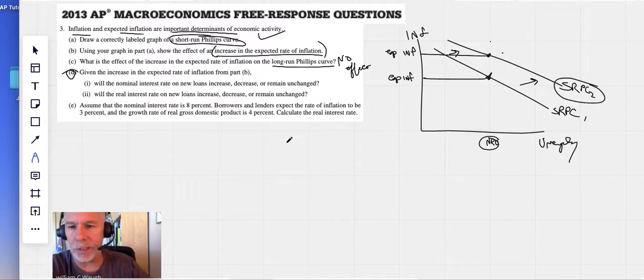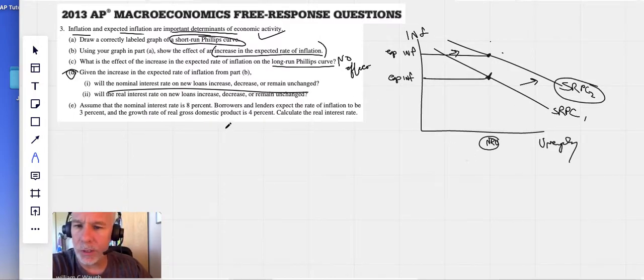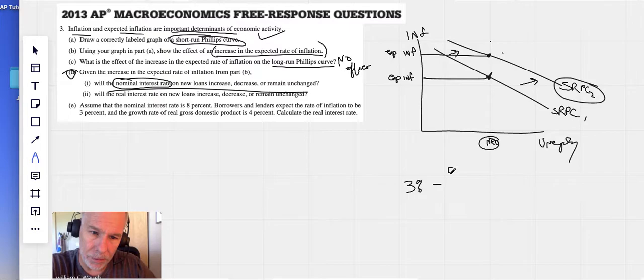Given the increase in the expected rate of inflation from Part B, will the nominal interest rate on new loans increase, decrease, or remain unchanged? Well, think about that for a second. Nominal interest rates are set by bankers, right? So if we expect the inflation rate to go up, wouldn't bankers want to raise their nominal interest rate, the rate they want to charge for a loan? You would think so. Let's talk about it for just a second, because this is important here.